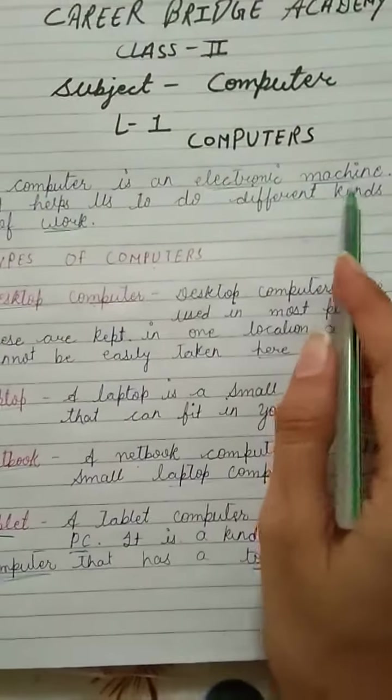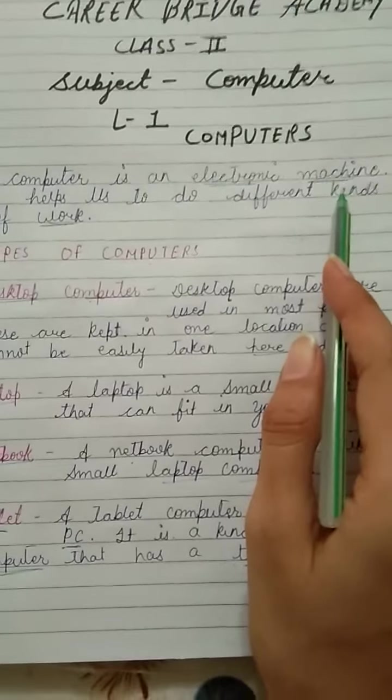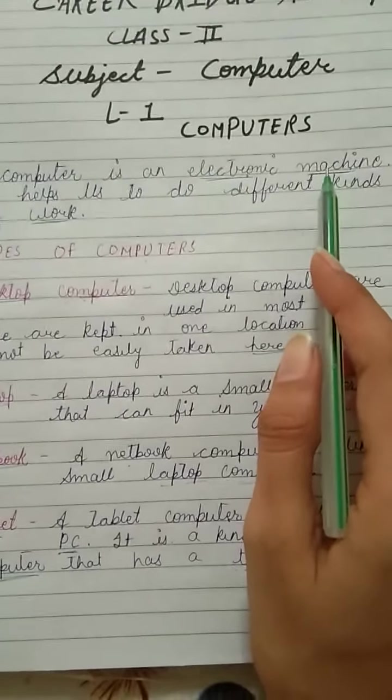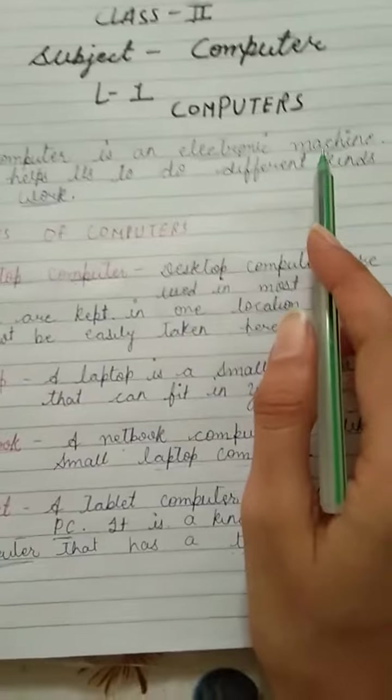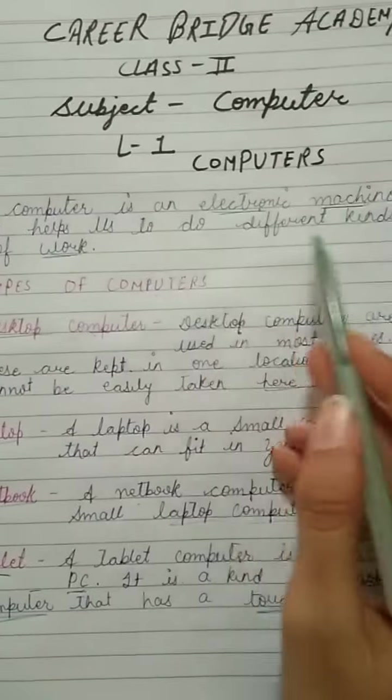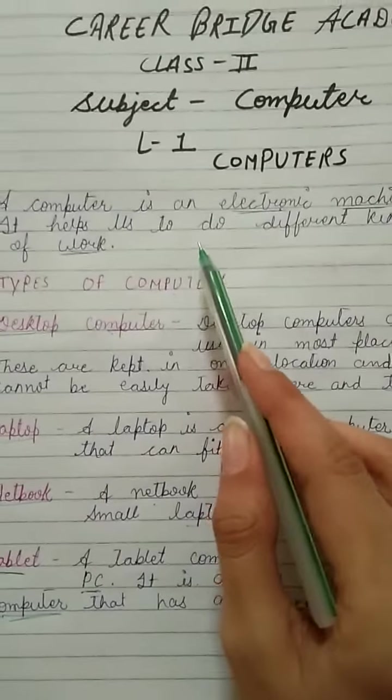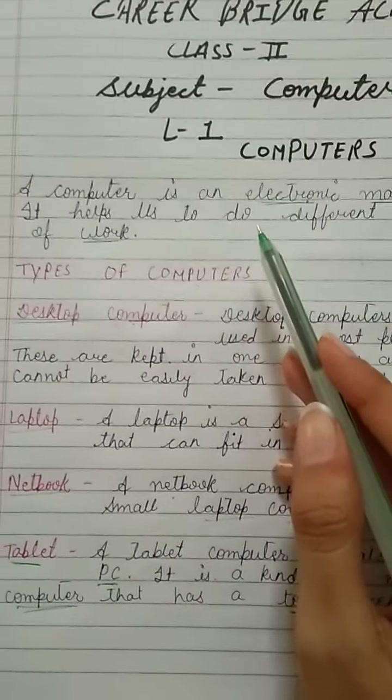A computer is an electronic machine. You all know computer is a type of electronic machine which needs electricity to do work. It helps us to do different kinds of work.